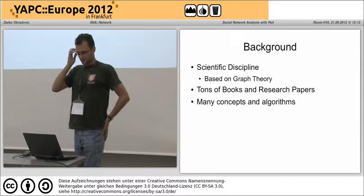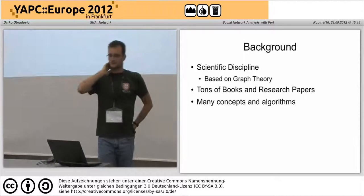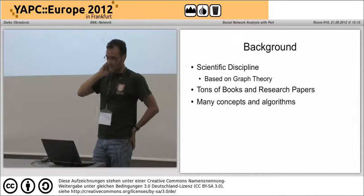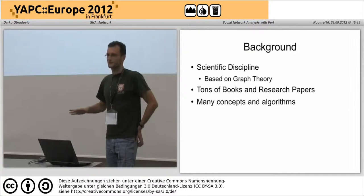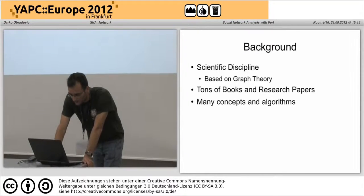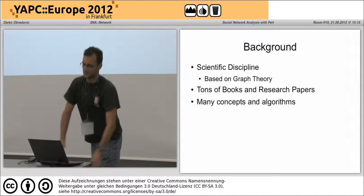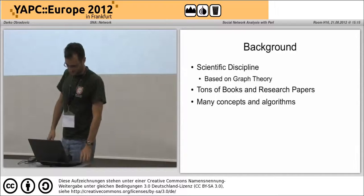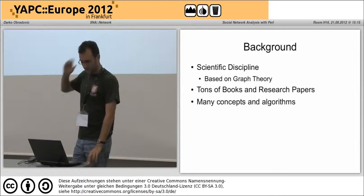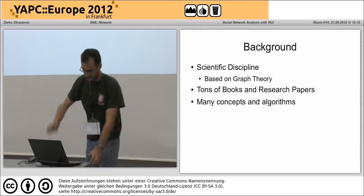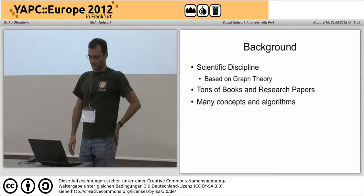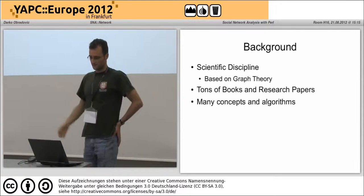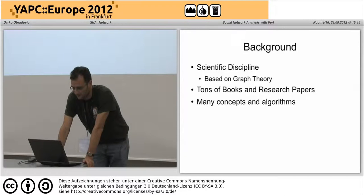Network analysis is a very active research discipline in science with its foundations in graph theory, which most people should know from basic math studies, but it has a very different focus. There exist lots of books and research papers on this topic — I think around 3,000 to 4,000 publications per year in the wider area. Many mathematicians and physicists have become very active here, and it's kind of difficult to keep track of all this. There are so many ideas, concepts, and methods to analyze networks that you have to be really picky to find something suitable to your problem.